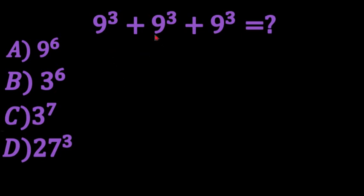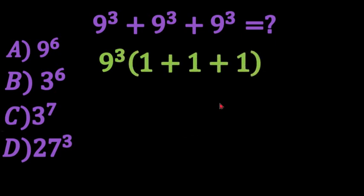So since 9 to the power of 3 is common in all of these three we can pull that out as a factor. So we would have 9 to the power of 3 times 1 plus 1 plus 1. And now 1 plus 1 plus 1 is equivalent to 3. So we would have 9 to the power of 3 times 3.